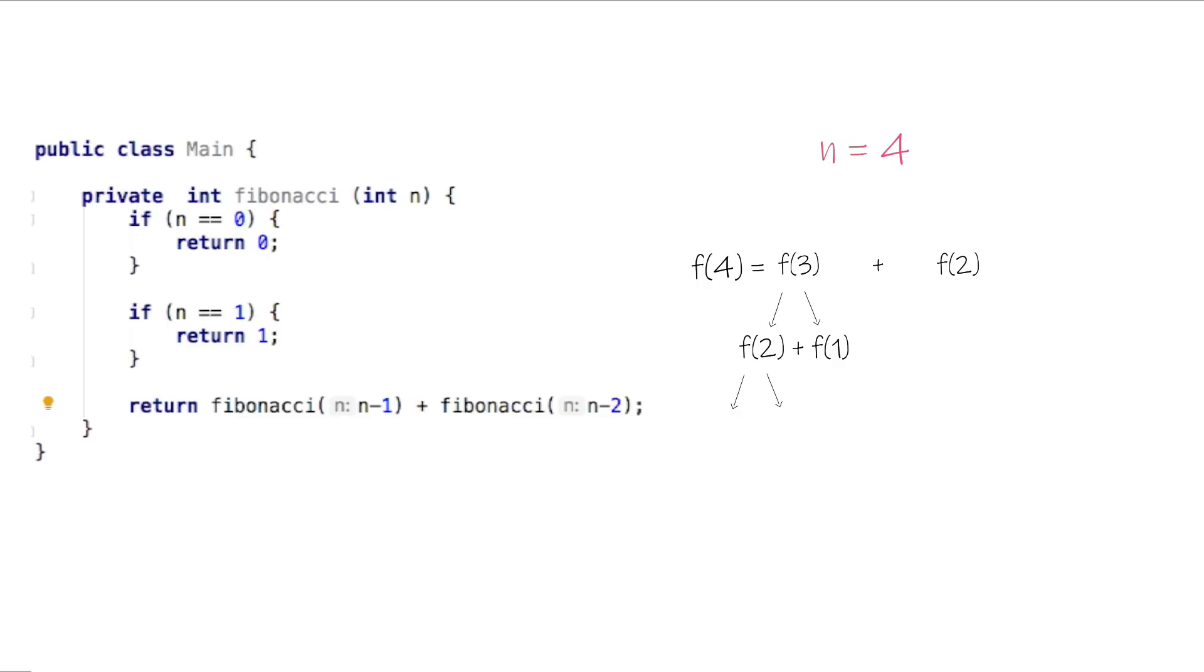Fibonacci 2 will end up returning Fibonacci 1 plus Fibonacci 0. And Fibonacci 1 will return 1, Fibonacci 0 will return 0.